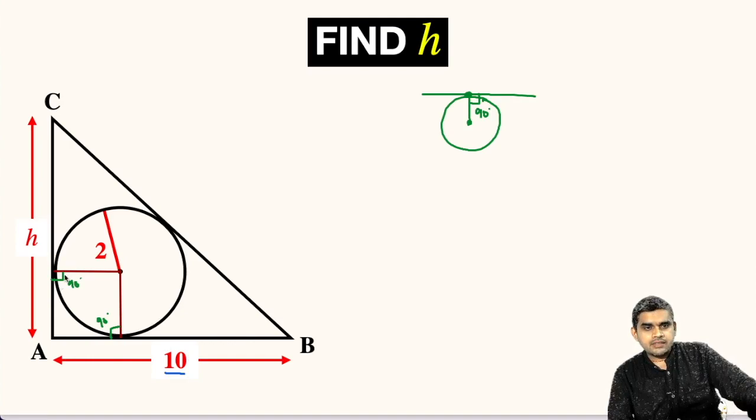Here, AB and AC are tangent to this circle. In fact, BC is also a tangent to this circle.